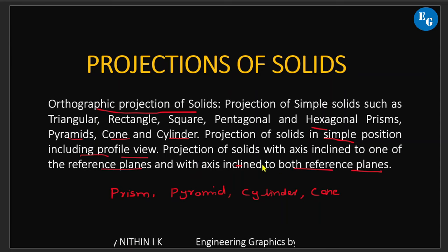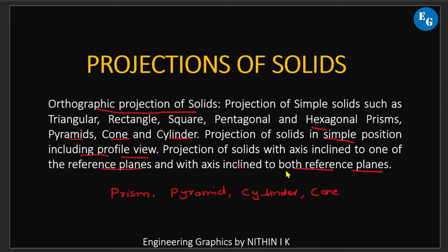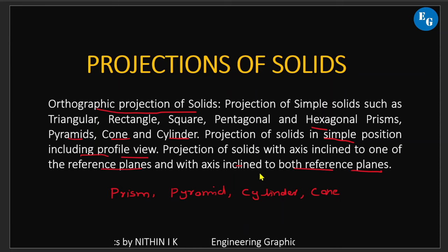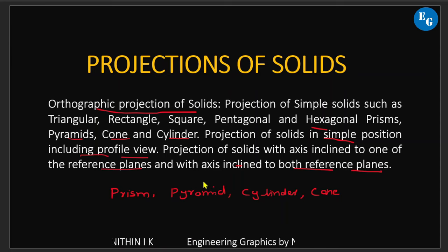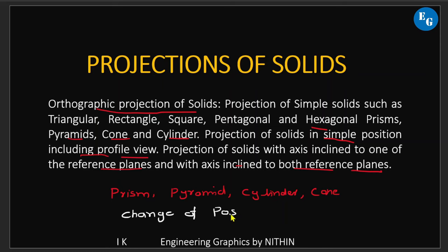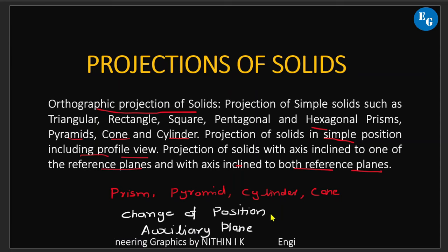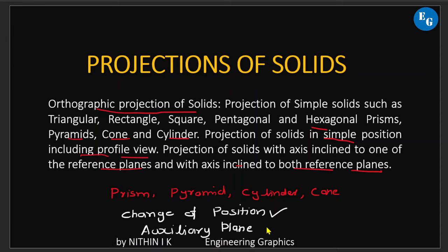Axis inclined to one plane is usually a rare item. Almost the same questions involve axis inclined to both the reference planes — directly or indirectly inclined to both HP and VP. In this module, we will use two methods: the change of position method and the auxiliary plane method.